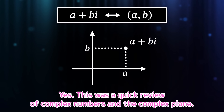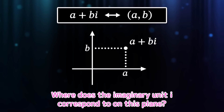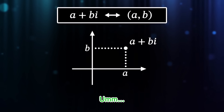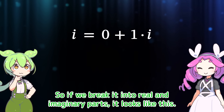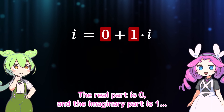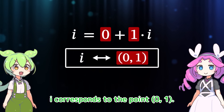This was a quick review of complex numbers and the complex plane. Now let's get to the heart of the problem. Where does the imaginary unit I correspond to on this plane? The imaginary unit I is a kind of complex number too. If we break it into real and imaginary parts: the real part is 0 and the imaginary part is 1. So I corresponds to the point (0, 1).